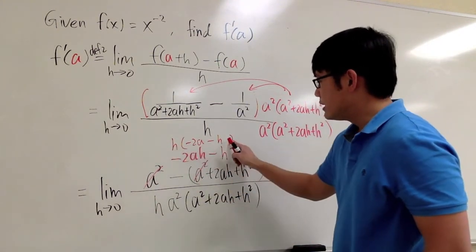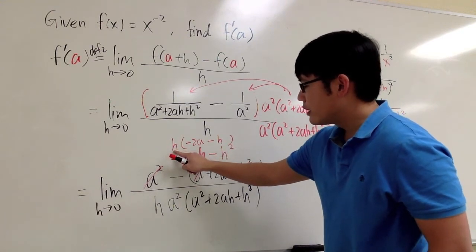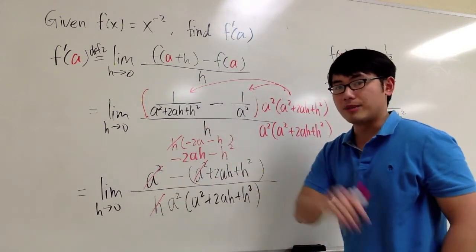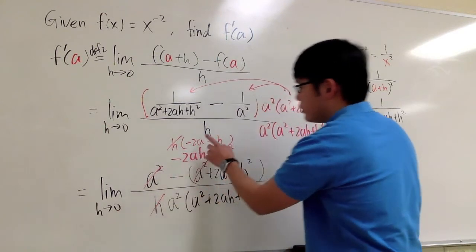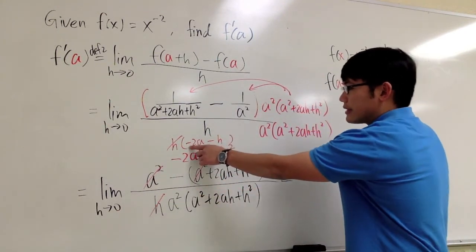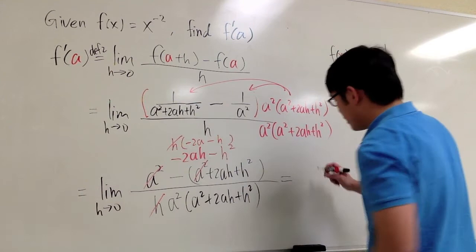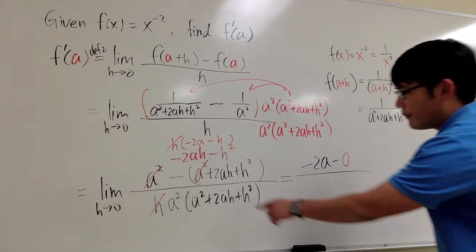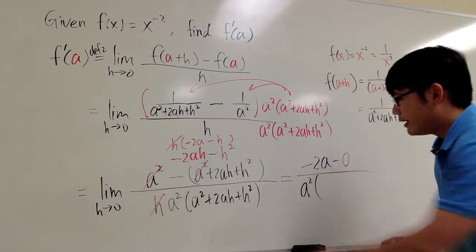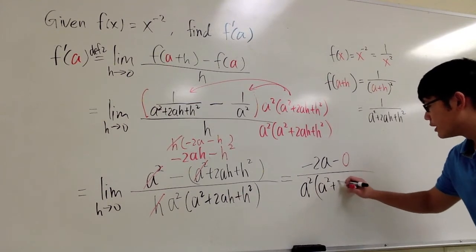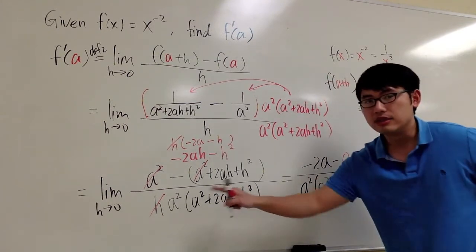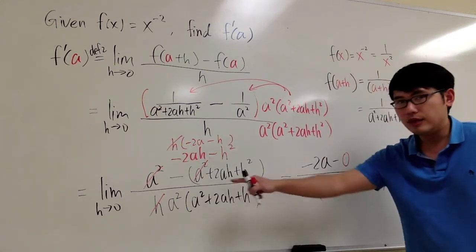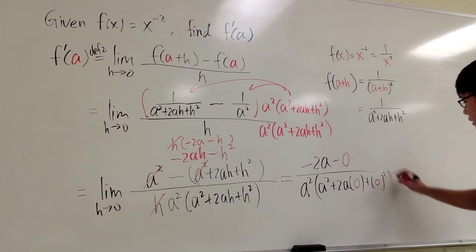After cancelling h from top and bottom, we can finally plug 0 into all remaining h's. On the top we have negative 2a minus h, which becomes negative 2a minus 0. On the bottom we have a squared times a squared plus 2ah plus h squared. Plugging in 0, the 2ah and h squared terms vanish, leaving a squared times a squared.